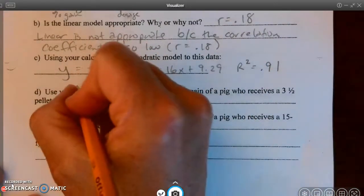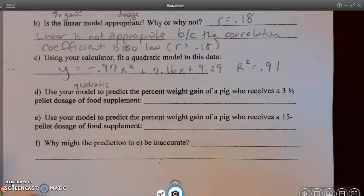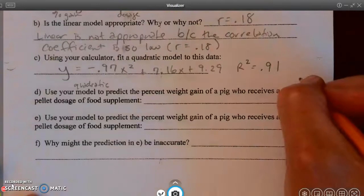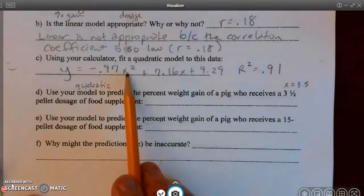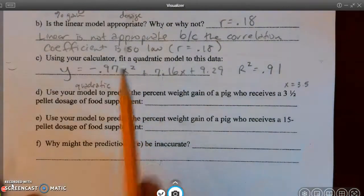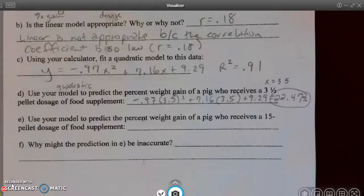Use your model. And they mean the quadratic model here because linear one was not a good model. To predict the percent weight gain of a pig who receives a three and a half pellet dosage. So we're going to let X equal 3.5. We're going to substitute it into our quadratic model. And we'll see what we get. So I put the 3.5 in for X. And I got 22 points. Since we've been doing two decimal places, we'll say 0.47. Okay. So I showed my substitution. And I put my answer as 22.47. And since that represents a percent, I put the percentage sign.